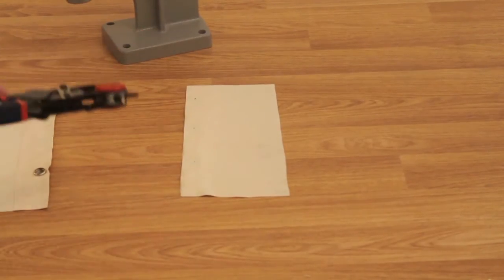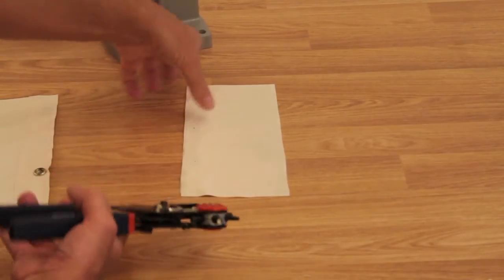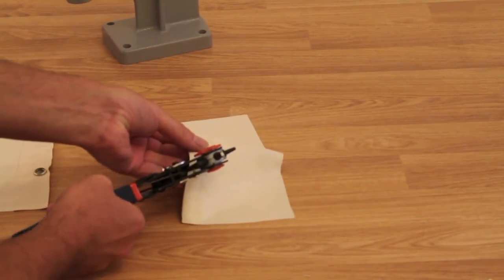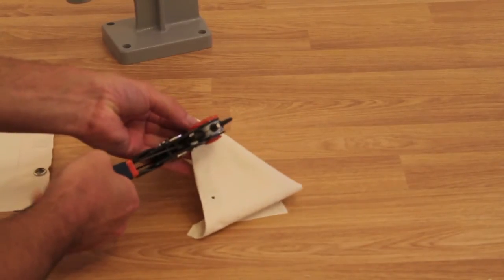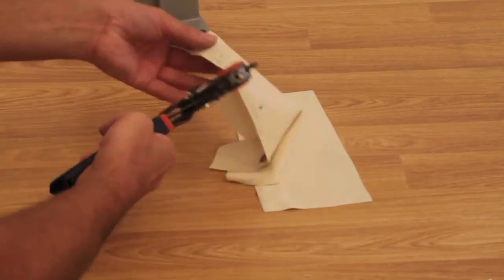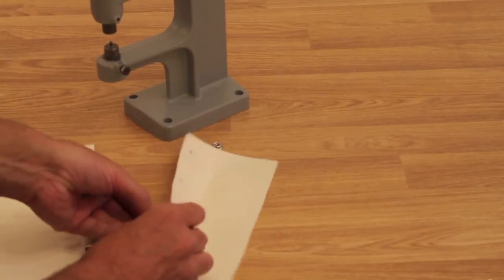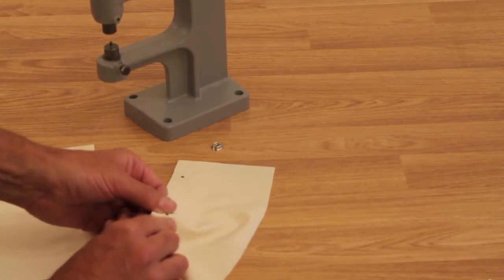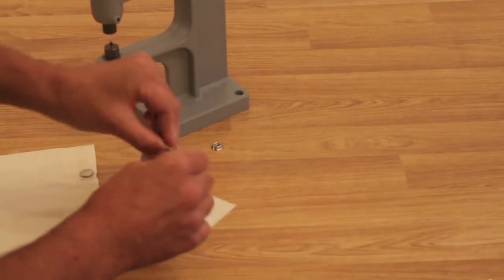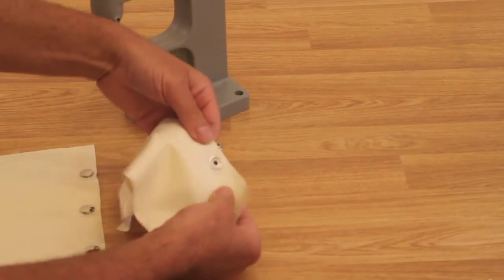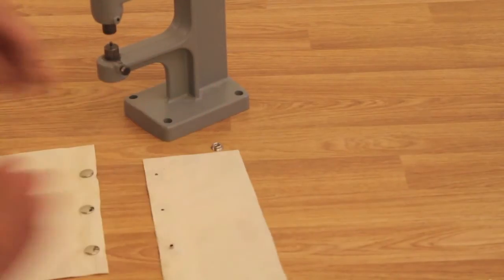Now to add our studs, we firstly make a guidance hole to poke one half of the stud through. Now we have our guidance hole, we poke half of our stud through. It's obvious and easy.